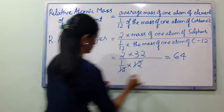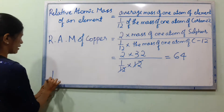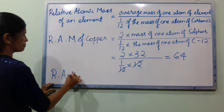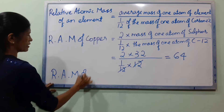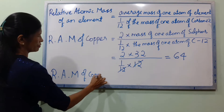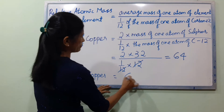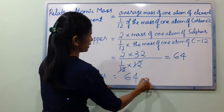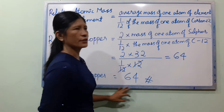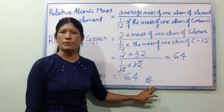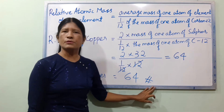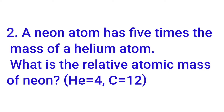The next step is the relative atomic mass of copper. Now let's go. Exercise 2: A neon atom has 5 times the mass of a helium atom. What is the relative atomic mass of neon?